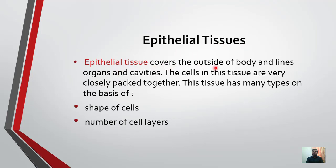Epithelial tissue covers the outside of a body and lines organs and cavities. The cells in these tissues are very closely packed together. Major function is protection of the whole body. In addition, it can form the lining of internal organs and cavities. The cells are tightly packed so that any foreign material cannot enter inside the body. This tissue has many types on the basis of shape of cells and number of cell layers.